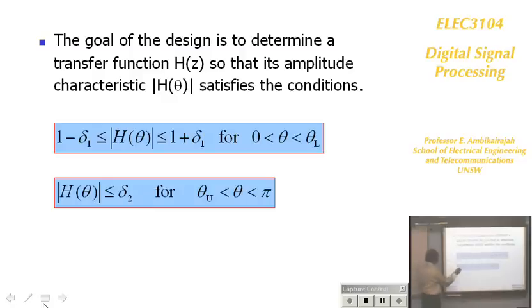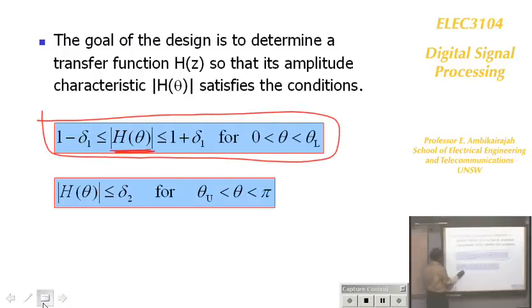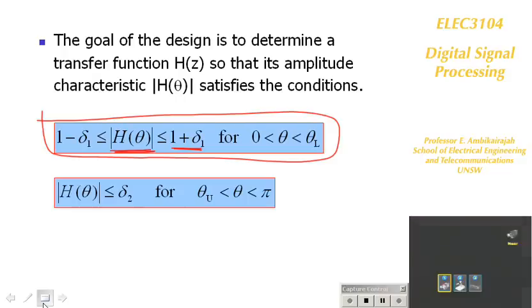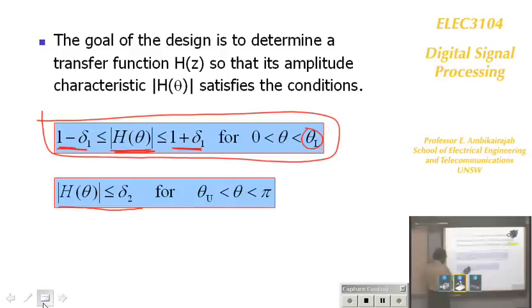Everything explained earlier is given as a simple equation: the magnitude response in the passband should be less than 1 plus delta 1 or greater than 1 minus delta 1, where theta L is the passband. Similarly, in the stopband, the magnitude theta should be less than or equal to delta 2.